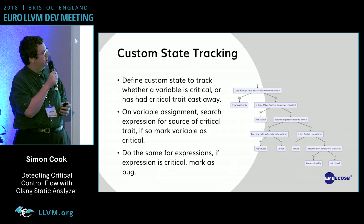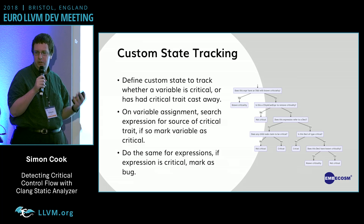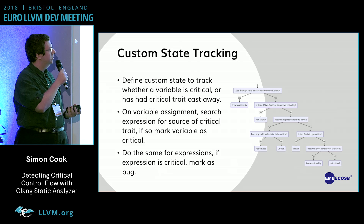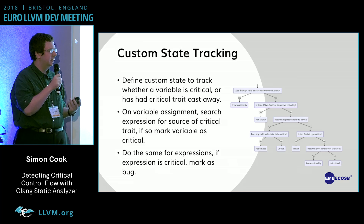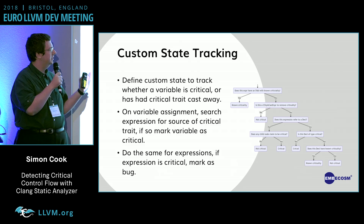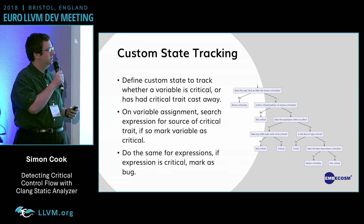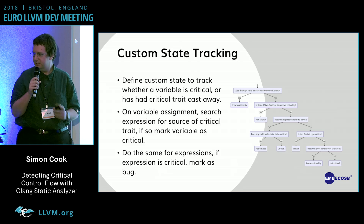What we do is, for every variable in a program, we track whether this variable has been marked as critical or has had its criticality cast away by a user. And whenever something is assigned, we look at the expression on the right-hand side of the assignment to search for any reason why we should pass on this criticality.